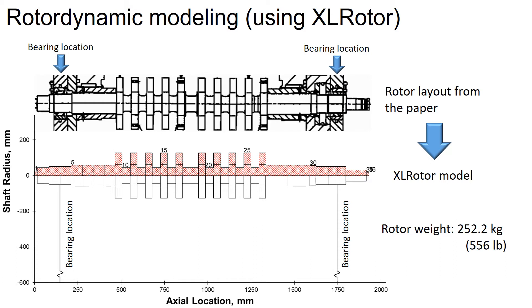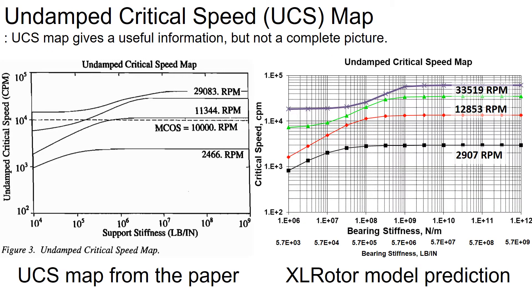Based on the model, the expected rotor weight is 252 kilograms. You could look into my previous videos to learn how to model the rotor into the rotor dynamics software. Here is the undamped critical speed map.